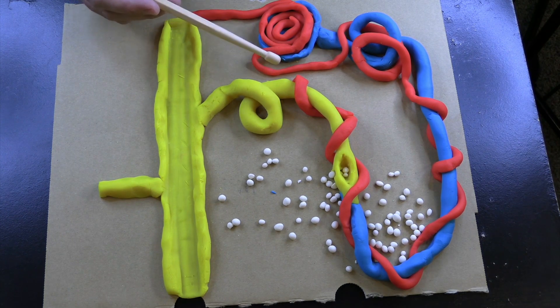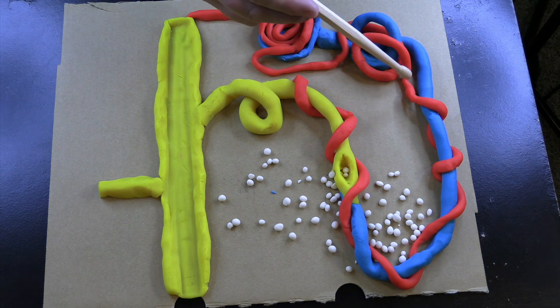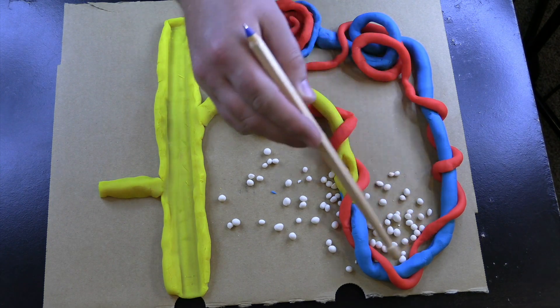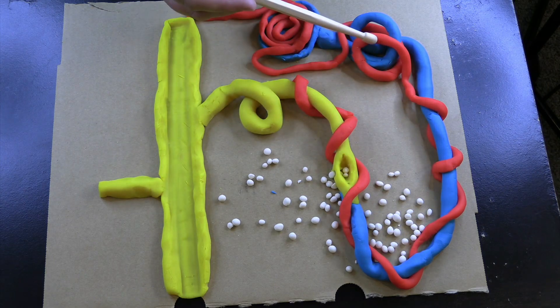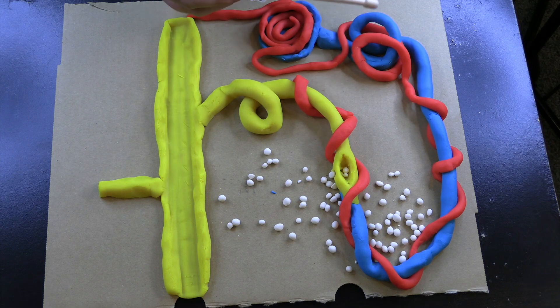The other end of that arteriole comes out and leaves Bowman's capsule, and this is the efferent arteriole. This vessel is going to follow the tubules of the nephron all the way through.